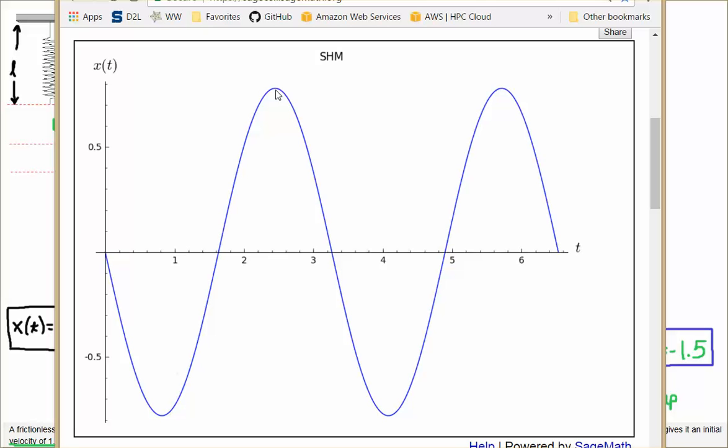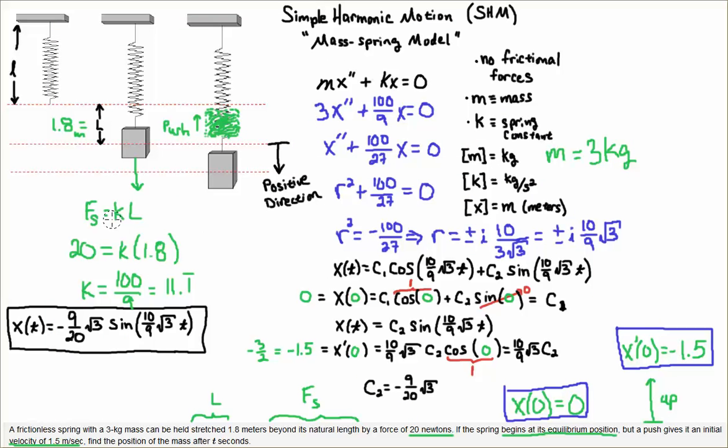The block goes all the way down to the bottom, reaches that point, then the spring pulls it back up to equilibrium. Then it goes all the way back up to the top. The spring pushes it back down, goes to equilibrium, and it just keeps oscillating up and down as time progresses. This is the time axis, x here is the position axis. That is how you solve this initial value problem.